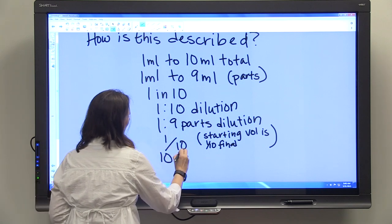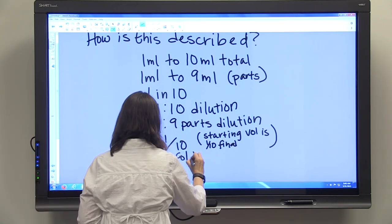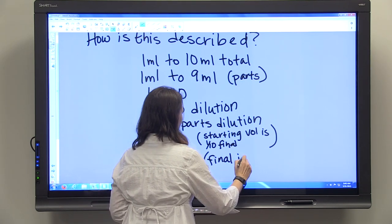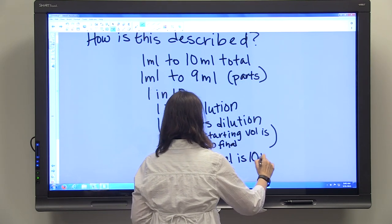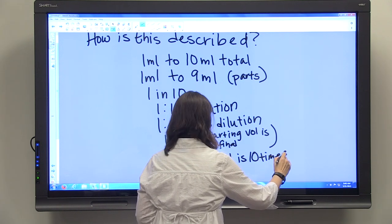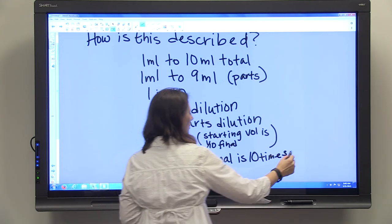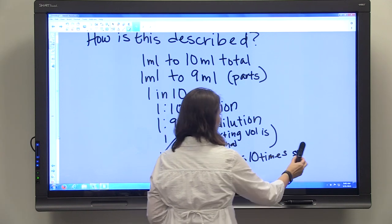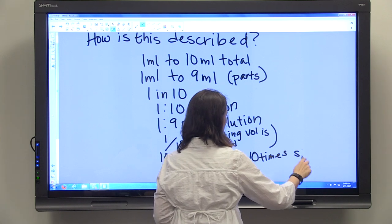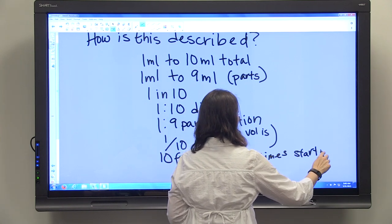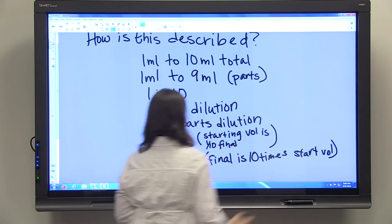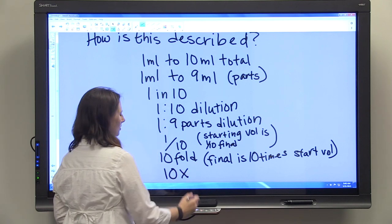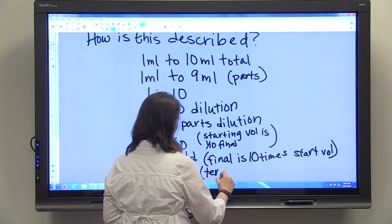It can be described as a tenfold dilution because the final is 10 times the starting volume. Or it can be described as a 10x dilution because it is 10 times diluted.